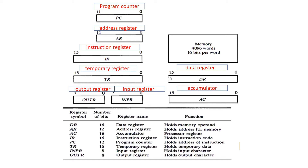And then AR register. AR register is nothing but address register. It's going to have 12 bits, from 0 to 11 — a 12-bit register. The main purpose of using address register is to hold the address for memory.